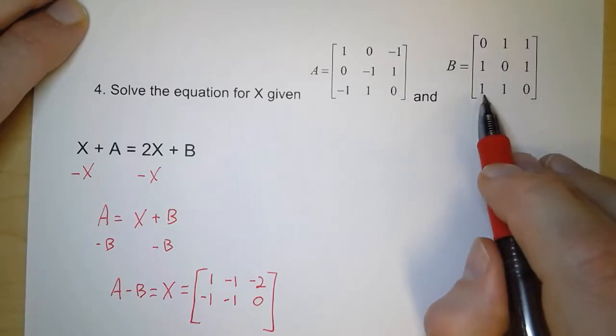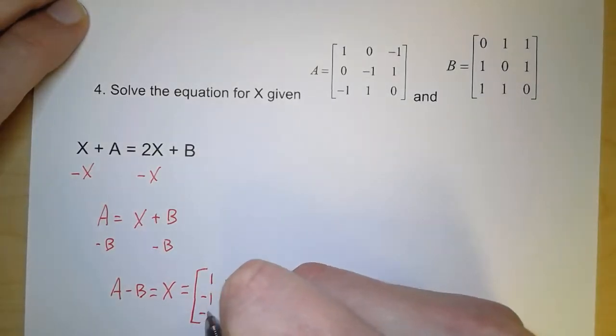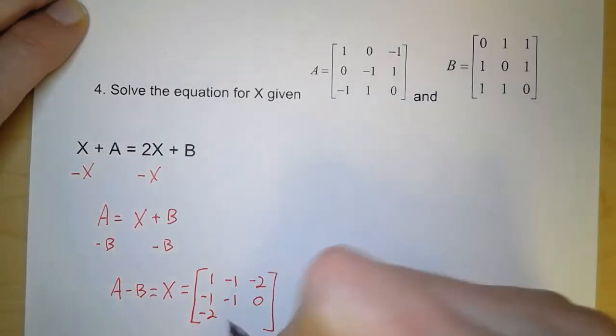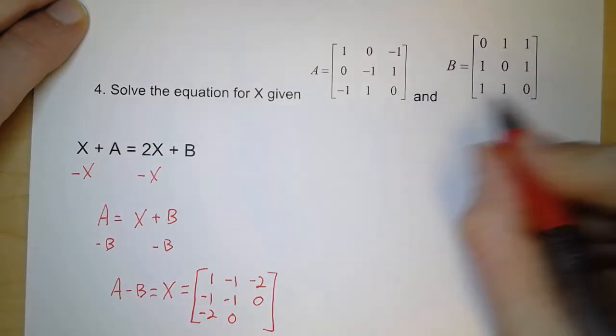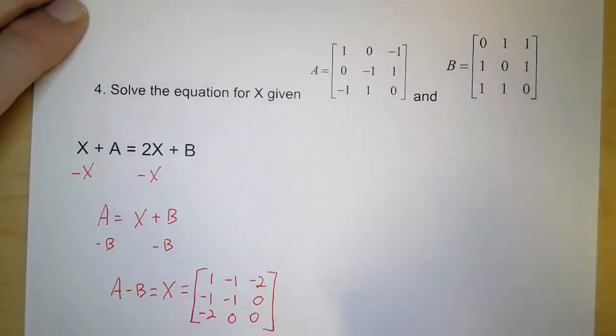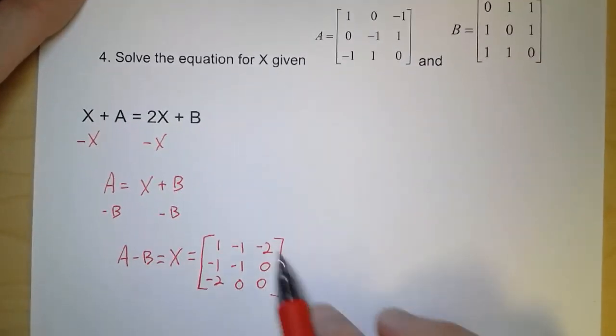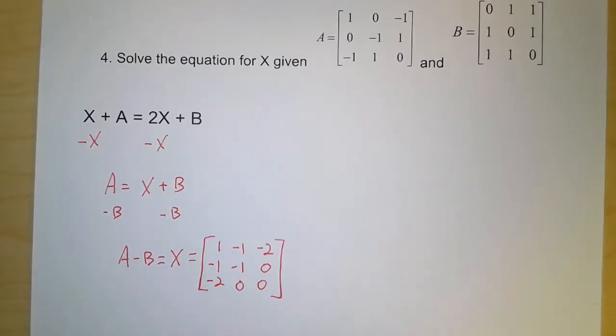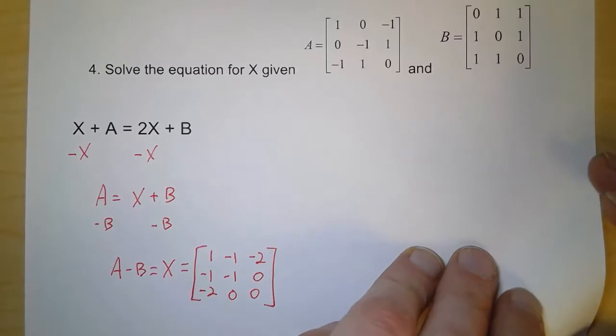Negative 1 minus 1, which starts the third row, is negative 2. 1 minus 1 is 0. And 0 minus 0 is 0. So this matrix is what makes this equation true. We solved it algebraically first for x. And then, using matrix A and B, we figured out what value that matrix actually had.